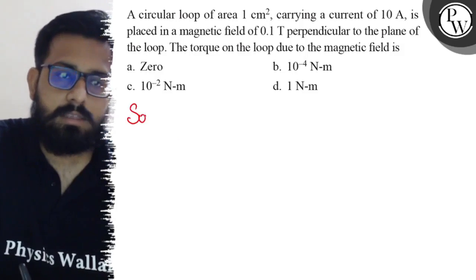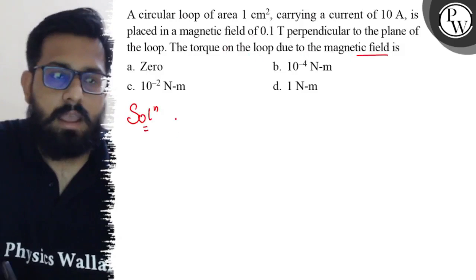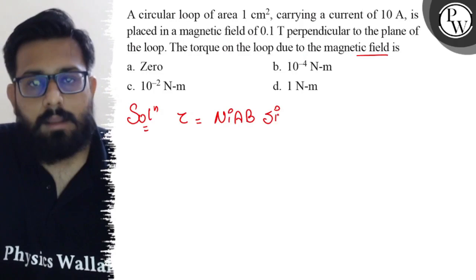So here in this question you have to find out the value of the torque on the loop due to the magnetic field. The torque can be written as τ = nIAB sinθ.